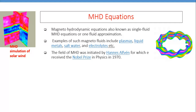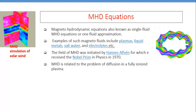The basic set of MHD equations includes the Navier-Stokes equation or the fluid equation, and the fluid equations include the continuity equation, the momentum equation, the Poisson's equation, etc., along with the Maxwell equations. These fluid and Maxwell equations should be coupled or solved together, either numerically or analytically.